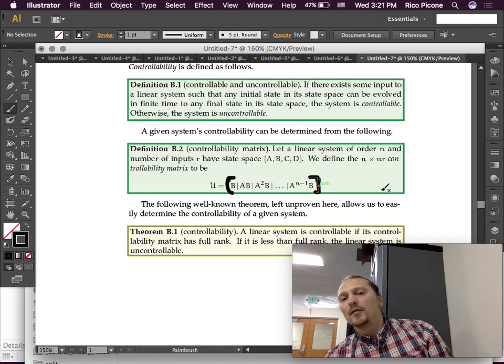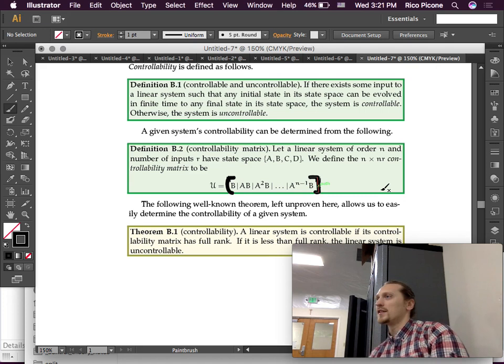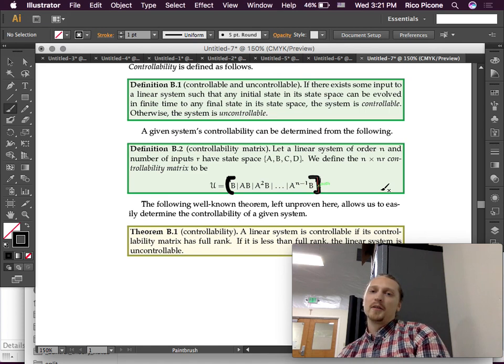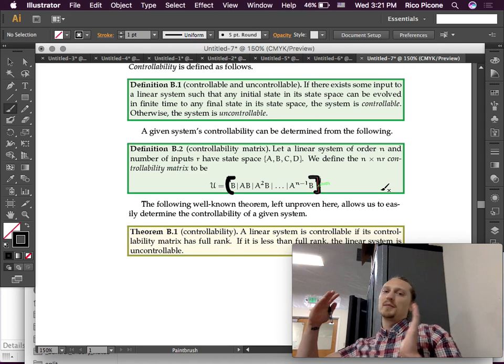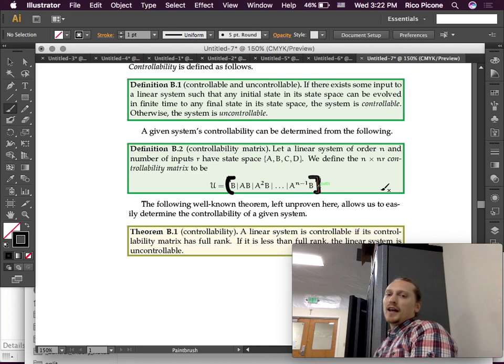So, this matrix is, we just stick the B matrix in, and then the next column is going to be A times B. Well, I mean, if you have a single input system, it's just a single column, but if it's a multiple input system, you have multiple columns. You put those columns in next to it, and then A squared times B. So, you just keep populating this matrix with these smaller matrix, sub-matrices, right? And that's a common idiom is to use this vertical bar to separate those sections. There's nothing magical about it.